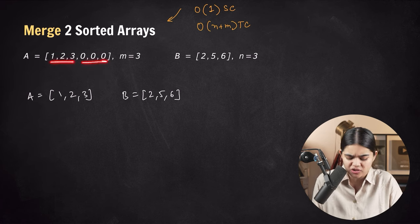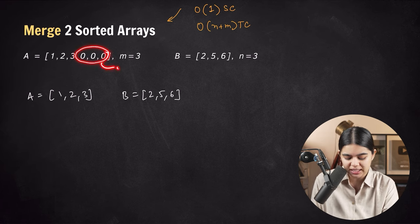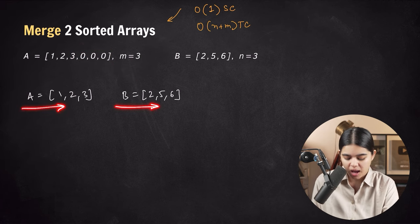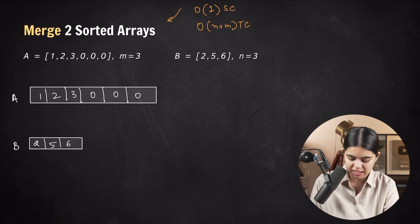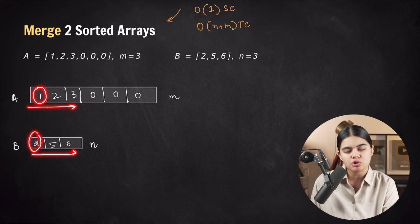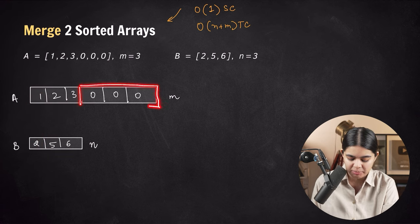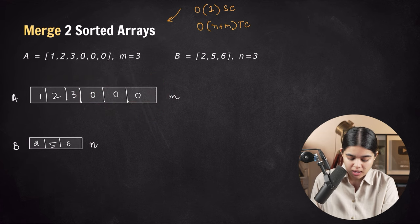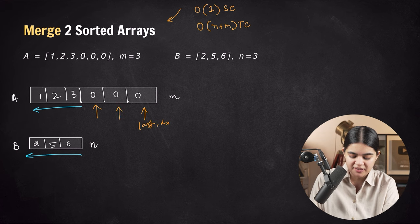We are going to solve our problem with O(1) space complexity and O(m+n) time complexity. The extra space process had O(m+n) time complexity plus extra output array space. We need to find a way without extra space. Since array A already has size m plus n with zeros at the end, we can use it as our output array directly.